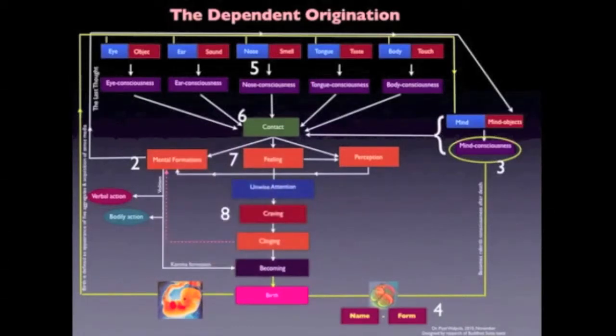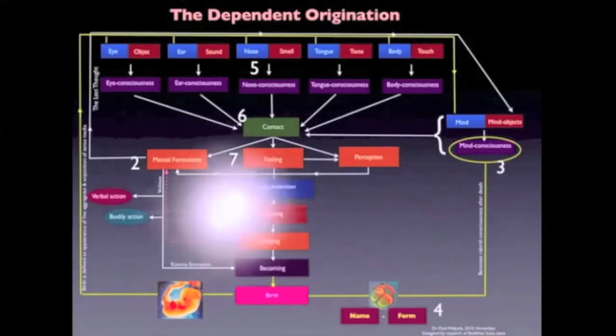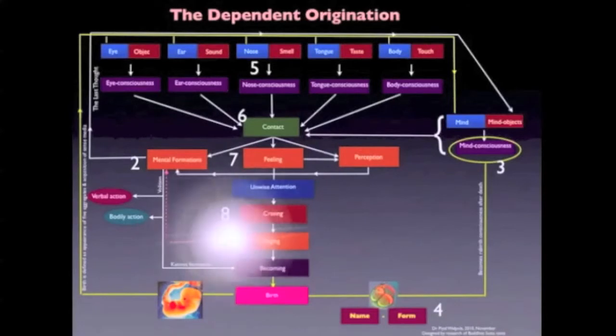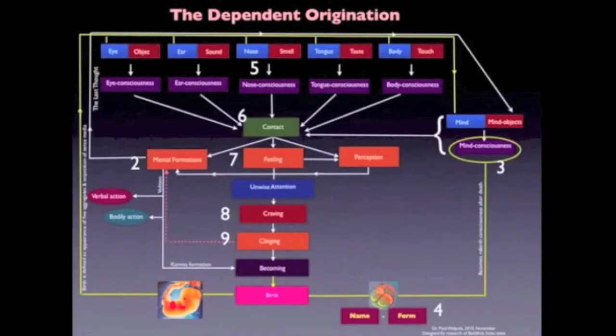Next, through unwise attention, we have craving and we have clinging. Craving is sometimes referred to as negative desire, and clinging is referred to as attachment. And that is attachment to things that we take pleasure in and that obsession to want more and more and more.